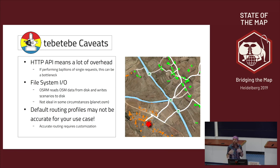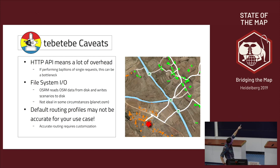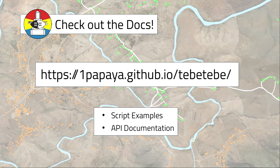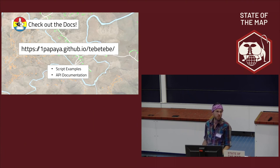Caveats: the HTTP API introduces a lot of overhead — if you're running a huge number of requests you'll hit a bottleneck. There's also IO between the OSM data and writing scenarios. Most importantly, be careful with default routing profiles — you can see people routing across a river and back, which isn't realistic. You really should add a time delay for ford equals yes. Don't just run it with the default profile and assume results are valid. Check out the docs — I wrote extensive documentation and script examples so you can use it effectively.